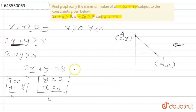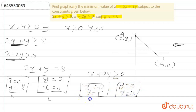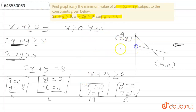Similarly, for the line x + 2y = 10: when x = 0, y = 5, and when y = 0, x = 10. We label this point as M and the other as B. Plotting this line, the point M is (0, 5) and point B is (10, 0).